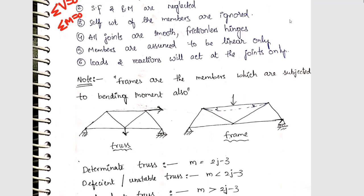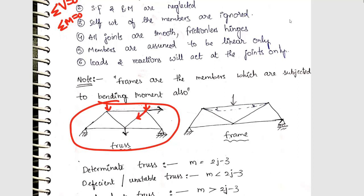This is the general representation of trusses — this is how trusses look. Basically in trusses we will have only axial forces. The load acts only at the joints. When the load is acting only at the joints, this load is distributed along the members and carried to the supports directly, which then provide reactions. There will be only axial forces in the members of trusses, and because of that there won't be any bending moment.